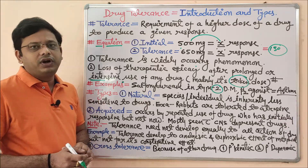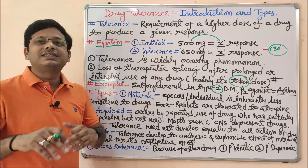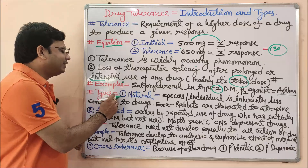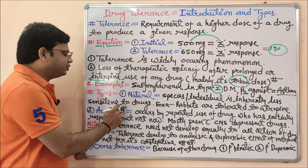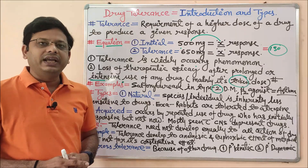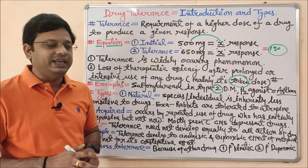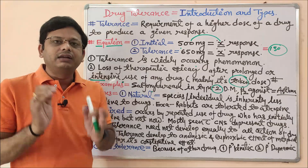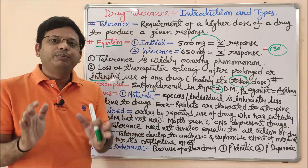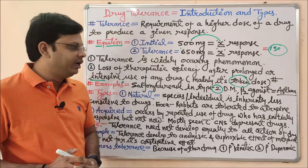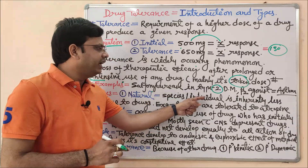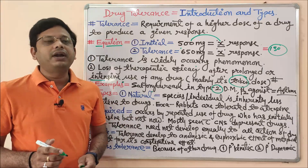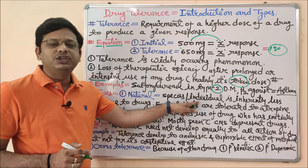Now coming to the types of tolerance. There are basically three types: first is natural, second is acquired, and third is cross tolerance. In some books, cross tolerance is included as a subtype, but as per the reference book KD Tripathi, there are three types. Natural tolerance, as the name indicates, means you need not do anything to develop it — it comes as a default phenomenon.